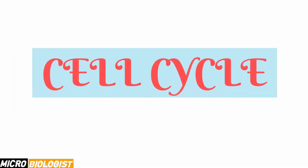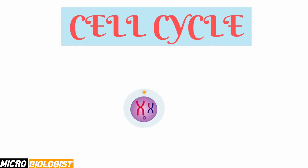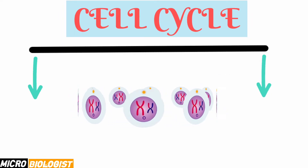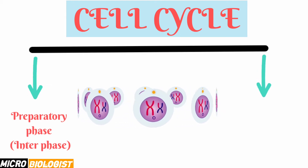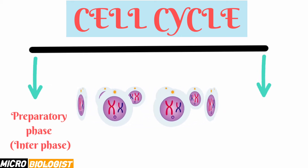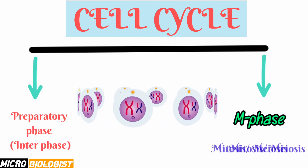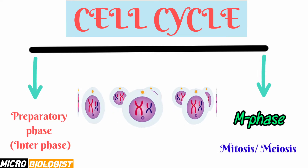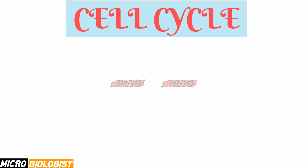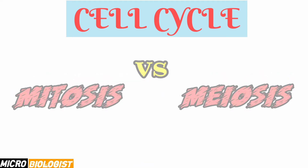The cell cycle is one of the most breathtaking processes that helps a cell not only grow but divide. The cell cycle has two major phases: one helps in the preparation of division, known as interphase or preparatory phase, and the other is the division phase called M phase, where M stands for mitosis or meiosis — the choice of the cell under different circumstances. This is today's lecture: the difference between mitosis and meiosis.